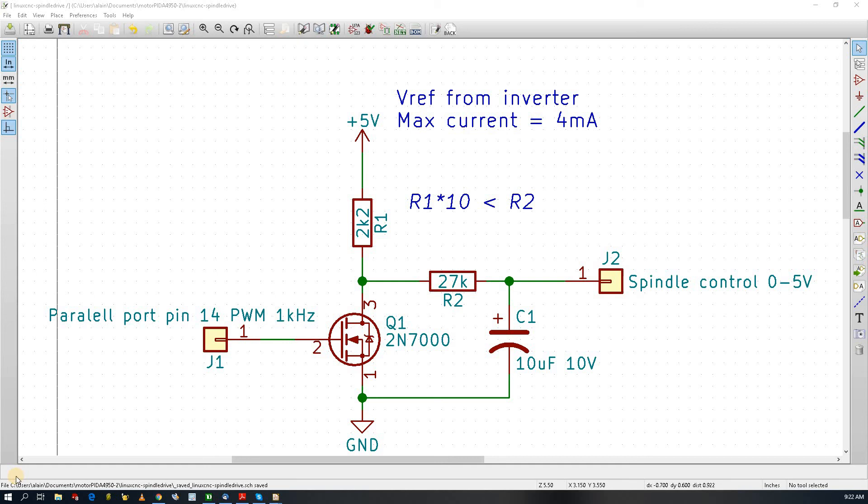Recently I came into a problem when I wanted to hook up my spindle to my parallel port for running on LinuxCNC.